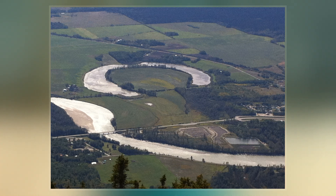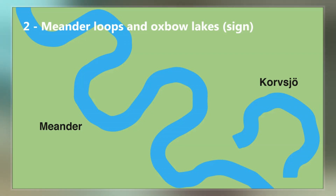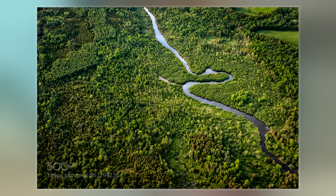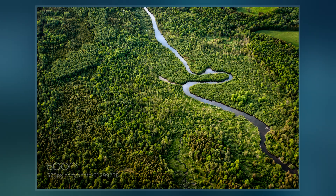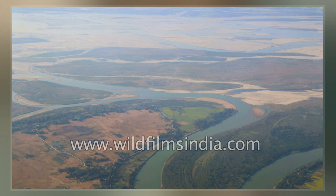Such lakes are also found in India. The word oxbow can also refer to a U-shaped bend in a river or stream, whether or not it is cut off from the mainstream. There has also been a possible oxbow lake postulated in Saraswati Flumen near Ontario Lake on Saturn's moon Titan.